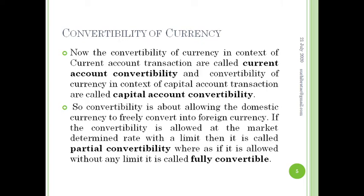Convertibility is about allowing the domestic currency to freely convert into foreign currency. If convertibility is allowed at a market-determined rate with a limit, then it is called partial convertibility. Whereas if it is allowed without any limit, it is called fully convertible.